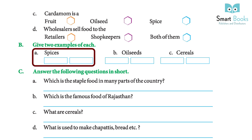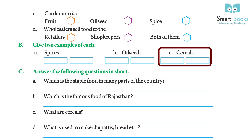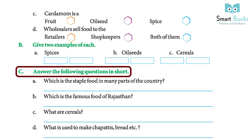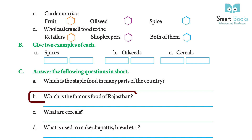Give two examples of each. Spices: clove and black pepper. Oil seeds: mustard and sunflower. Cereals: rice and wheat. Answer the following questions in short. Which is the staple food in many parts of the country? Answer: rice is a staple food in many parts of our country.